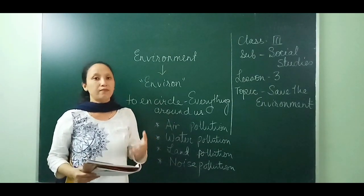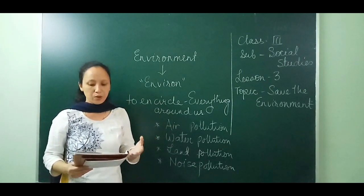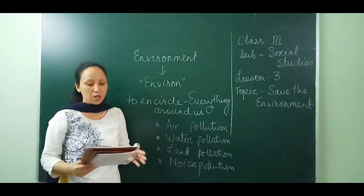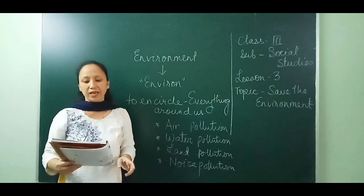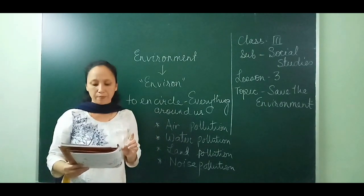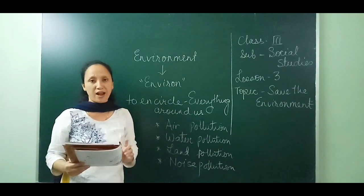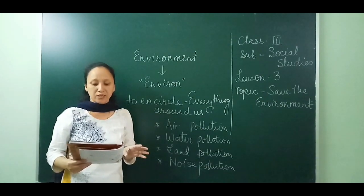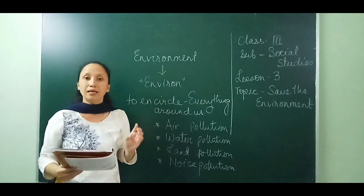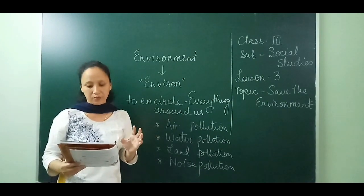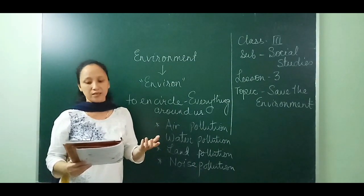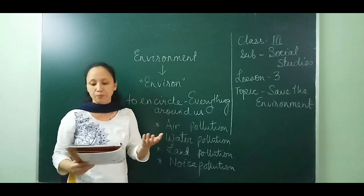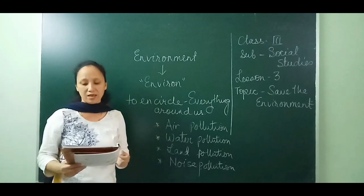Here I will read and then explain to you after every paragraph. Both living and non-living things make up our environment. People, plants, flowers, and animals are living things. Blackboards, chairs, desks, pencils, and books are non-living things.